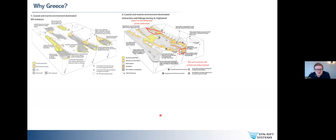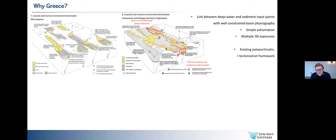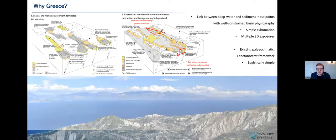We were looking for an outcrop place to do this, and you might guess from the title that we did this in Greece - not only because the weather and food are much nicer there than in Norway and the UK, but also because it gives us a link between deep water and sediment tip points to the basin in quite a well-constrained basin physiography. In the Gulf of Corinth, it's quite young so we have a simple extension history, and we have multiple 3D exposures that allow us to investigate this bedset to outcrop scale architecture. We also want a good paleoclimate and tectono-stratigraphic framework that's well understood, and somewhere logistically simple.